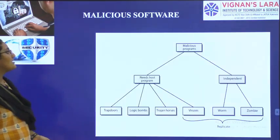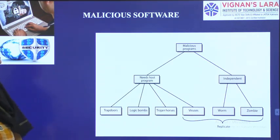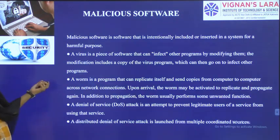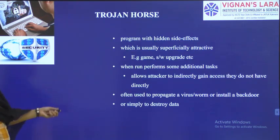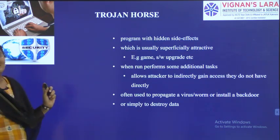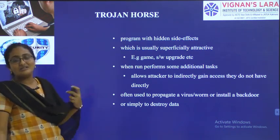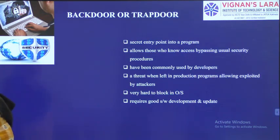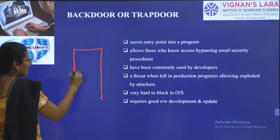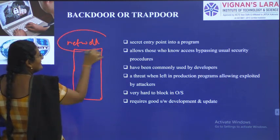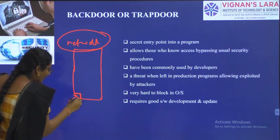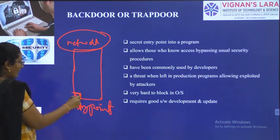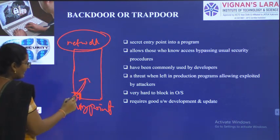Till now we have seen malicious software divided into two types: dependent and independent. Dependent types are trapdoors, logic bombs, Trojan horses, and viruses; independent types are worms and zombies. Next is trapdoor. Trapdoor is nothing but having a secret entry point. For every network or organization, we will have an entry point, a loophole, or a secret point. If something attacks your network through that point, that is called a trapdoor.